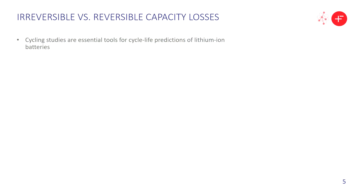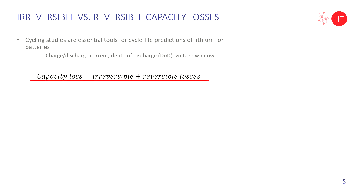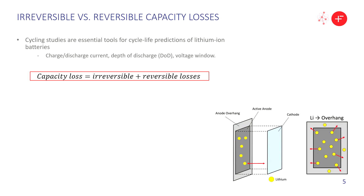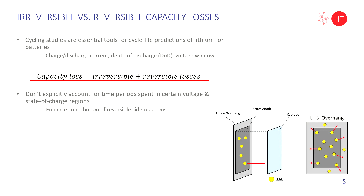Cycling studies are essential tools for cycle life predictions of lithium-ion batteries. They often involve changing the charge and discharge current, depth of discharge, and the voltage window. The total capacity loss reported in these studies is actually the sum of the irreversible and the reversible losses, where reversible losses can come from things like lithium loss to the anode overhang regions during cycling. One key drawback of cycling studies is that they don't explicitly account for the time periods spent in certain voltage and state-of-charge regions, and this may enhance the contribution of reversible side reactions as a result.